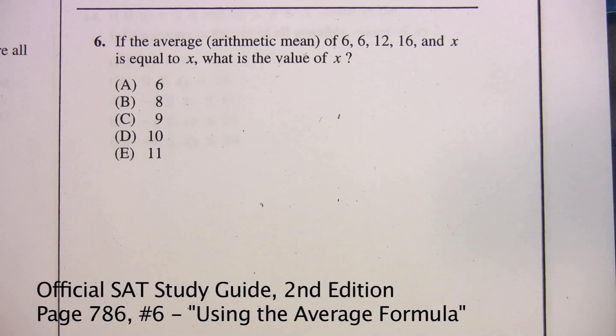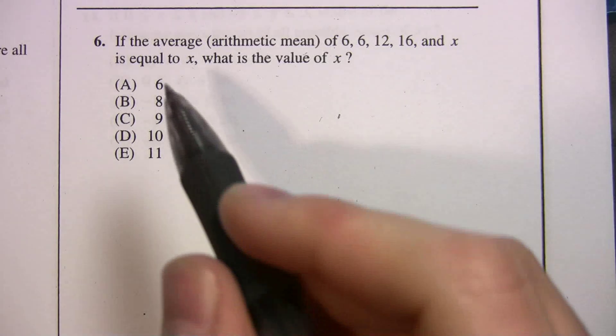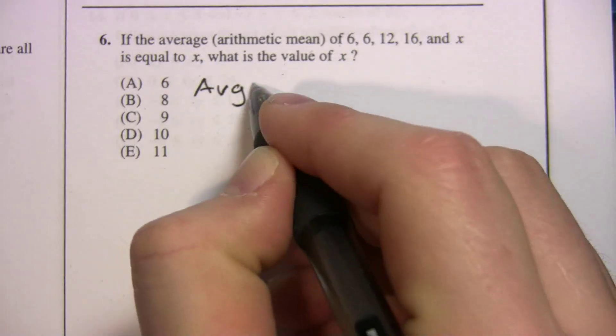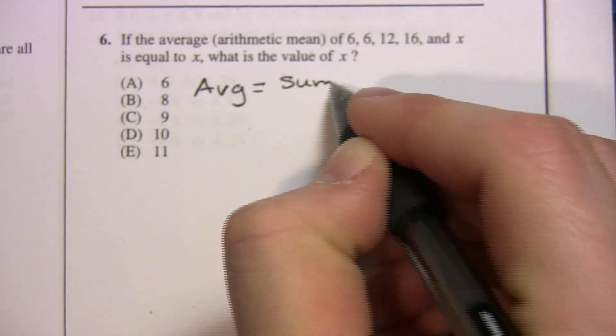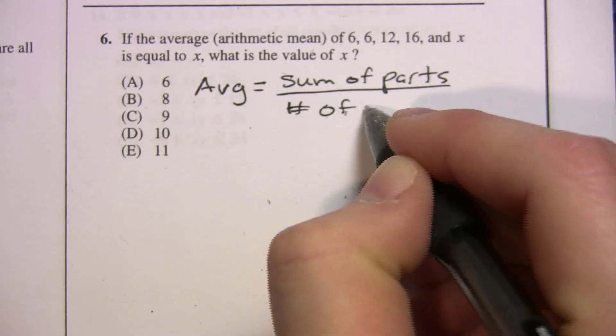Okay, this is an average question. I picked this question because you're going to see at least one or two questions on averages on the test. So you have to be really comfortable with the average formula. So we're going to do an easy one first, and we'll do a harder one, and I'll show you how the average formula can help you for both. So we're on page 786. This is number 6. If the average of 6, 6, 12, 16, and x is equal to x, what is the value of x? So first thing we should know, I'll write it down here, is our average formula. So average is equal to the sum of the parts divided by the number of parts.